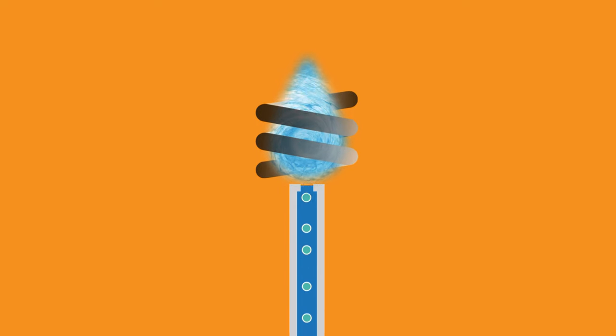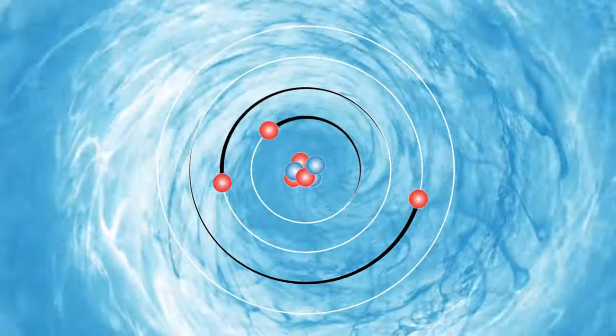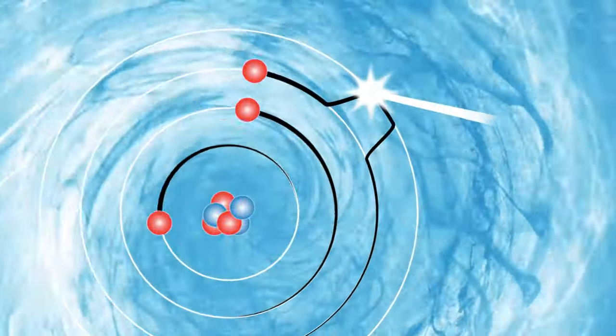In the plasma, the sample aerosol vaporizes and its atoms and ions are excited so that their characteristic wavelengths are emitted.